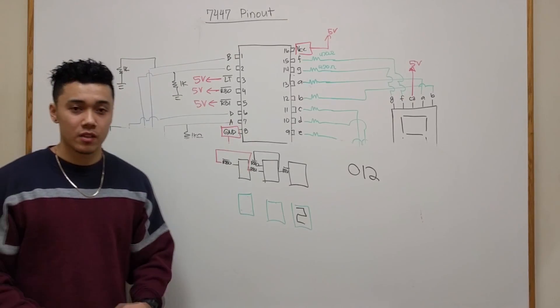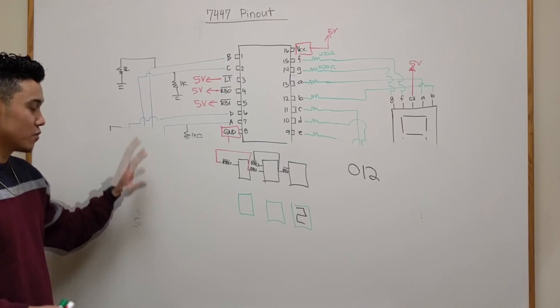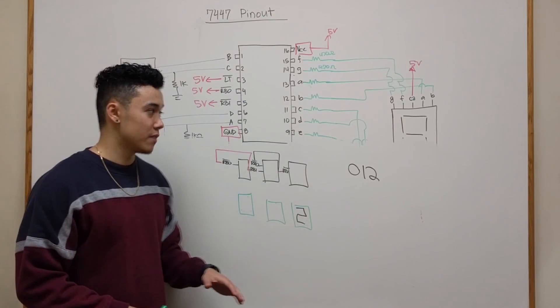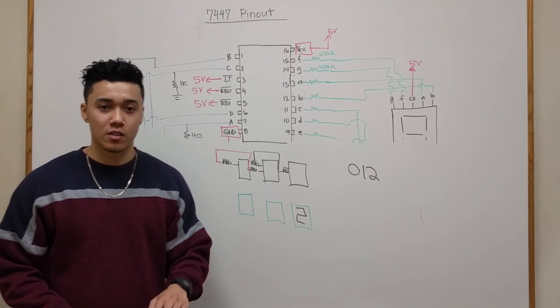So that's the pinout of the 7447 decoder chip. If you guys want this picture as a reference, I'll leave a link in the description below. And if you guys want to build the actual circuit on the breadboard, I'll leave a link to that video as well.